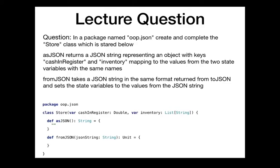So with JSON — we're concerned with these two methods: asJSON, which returns a JSON string with the current state variables, and fromJSON, which takes a JSON string in the right format and populates the state variables. The format should use the variable names as keys, with values being either a list of strings or a double, in standard JSON format.